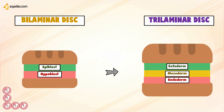Great, you have understood all the process. So what were we discussing? We were discussing about gastrulation. Now we are going to discuss neurulation. And yes, its name indicates that it is the process of neural tube formation.